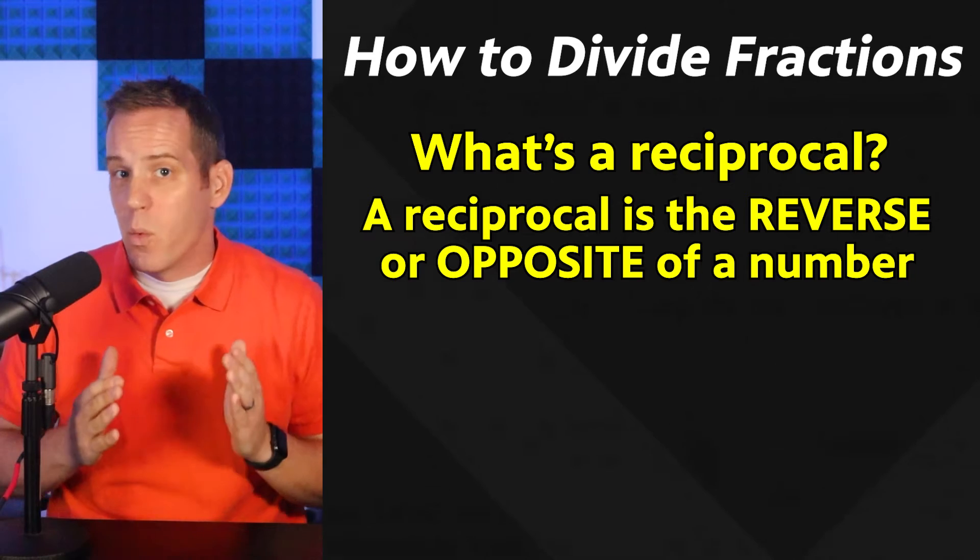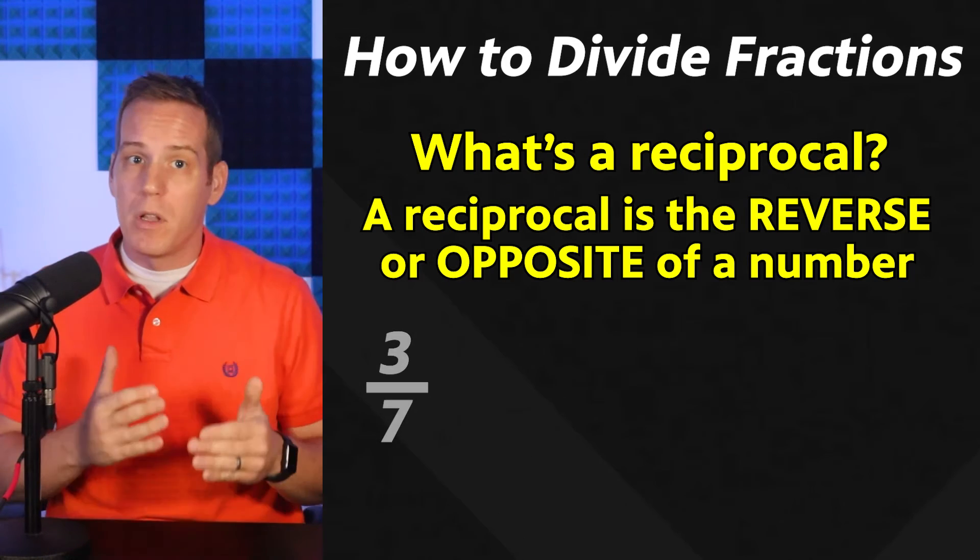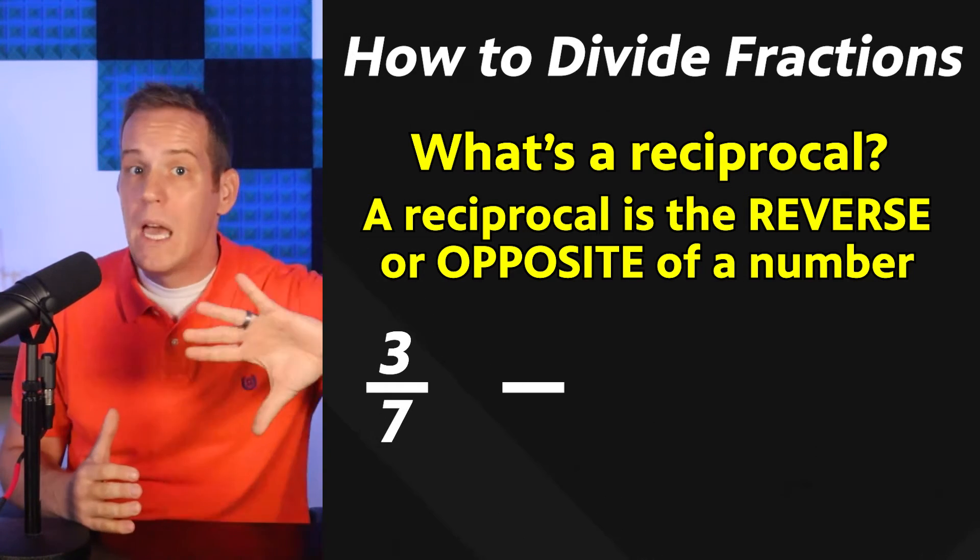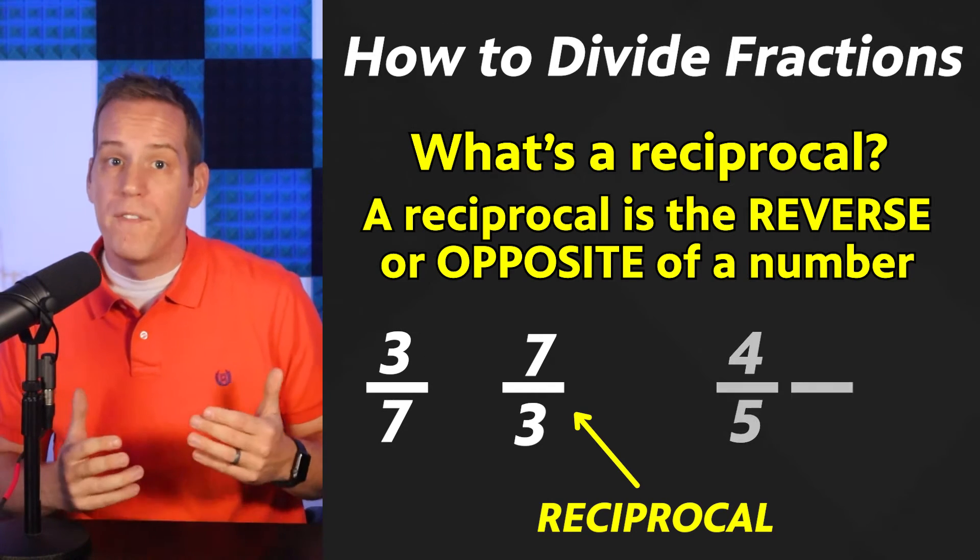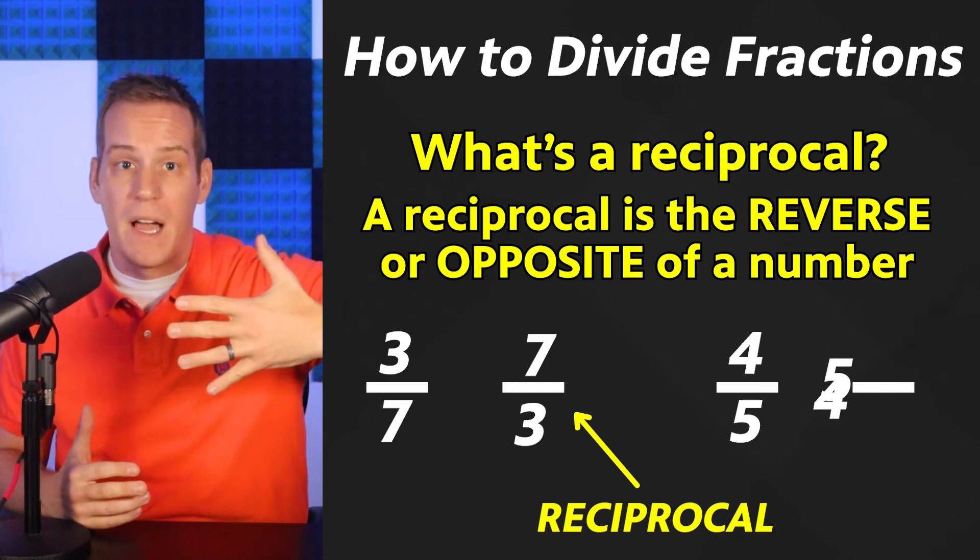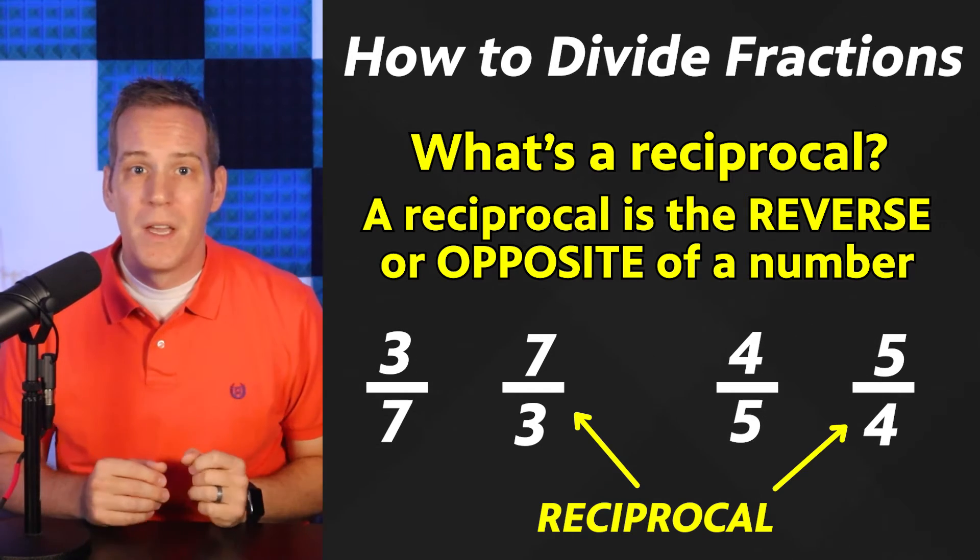So when it comes to fractions, the reciprocal of something like three sevenths would be flipped to become seven over three. The reciprocal of four fifths would be flipped around: five over four. We get it.